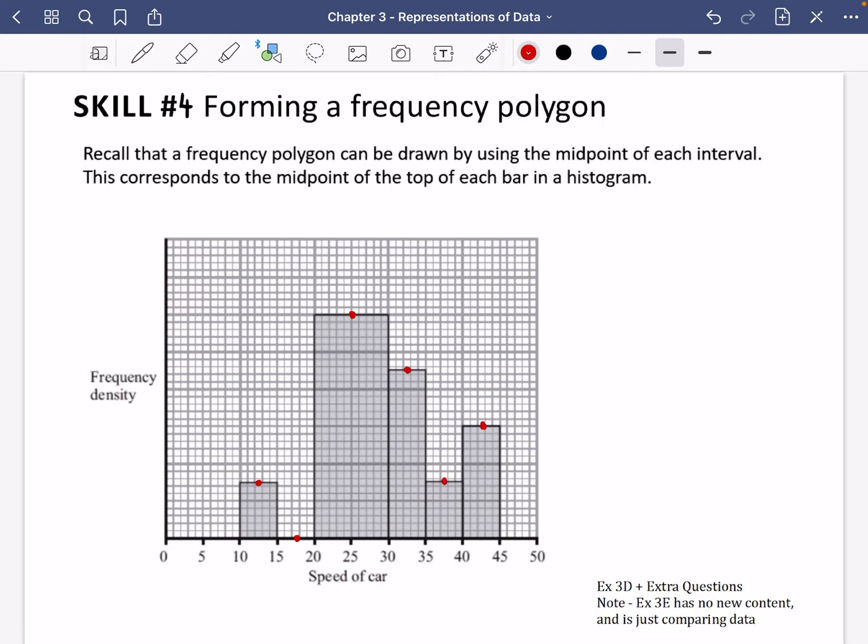And for a frequency polygon, you just join them together using a straight line. So I'm going to join this to this, this to this one, this here, this like this, and then this up across like this.